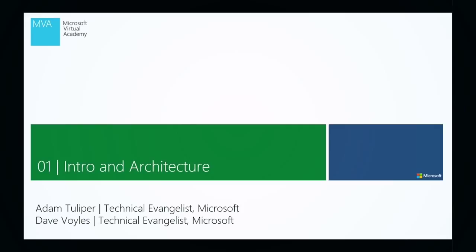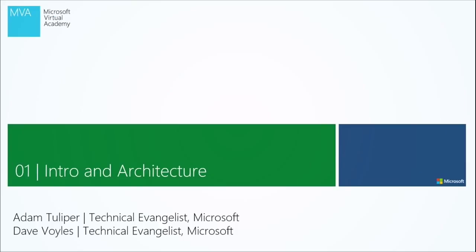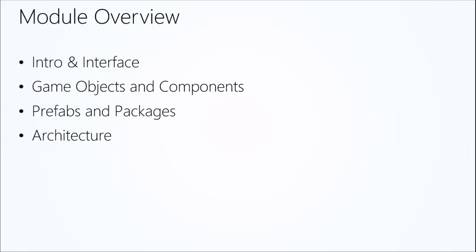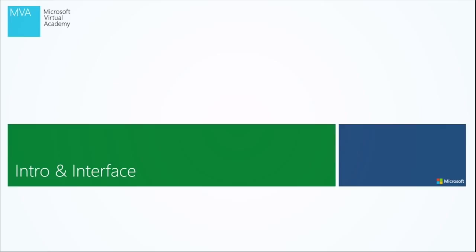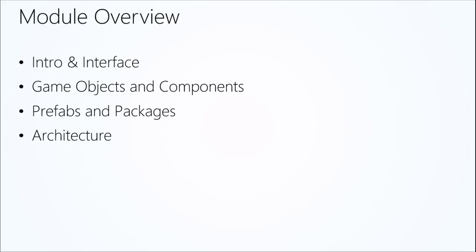This session we're going to be doing intro and architecture of Unity. In this module, it's a basic intro and the interface. We're going to talk about game objects and components — essential parts inside of Unity — prefabs and packages, the architecture of Unity, and probably best practices for how to architect your games as well. Architecture is a very important subject coming from a software development world. It's important to understand how Unity works, its various components, how it fits together, and the coding model.